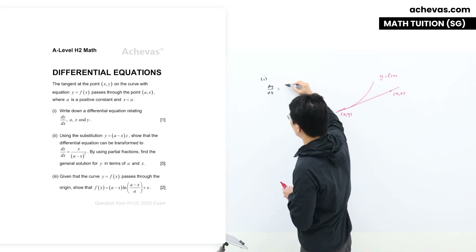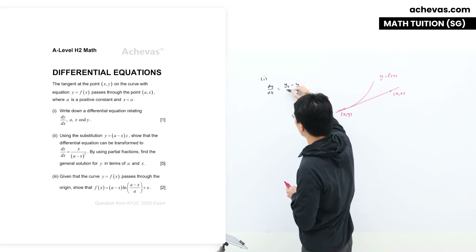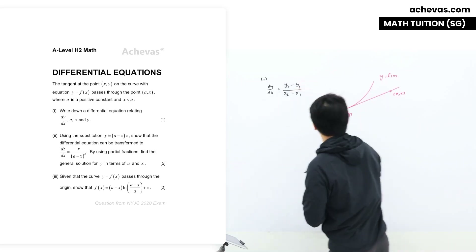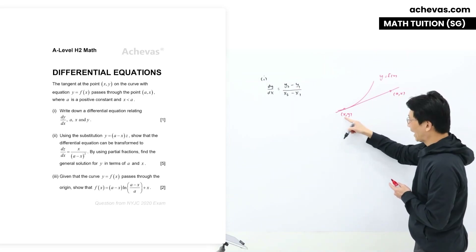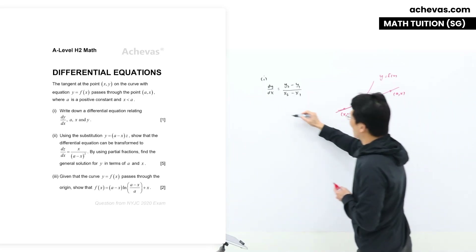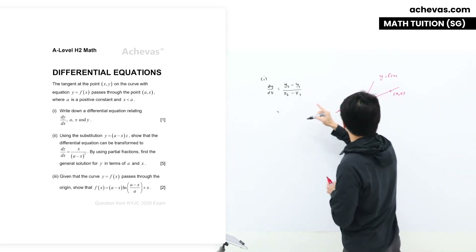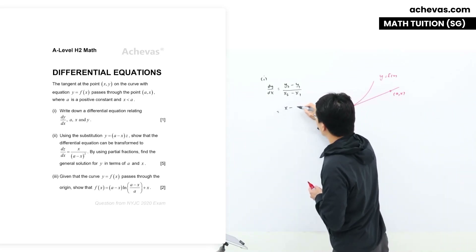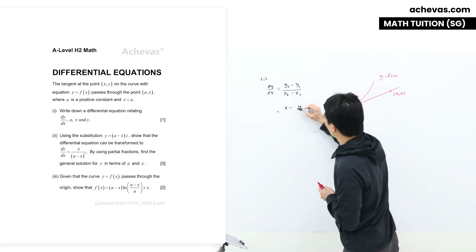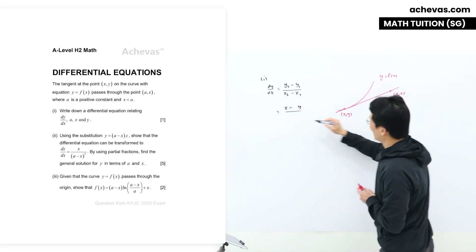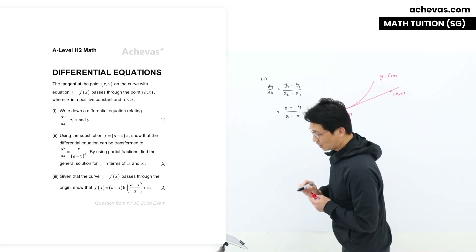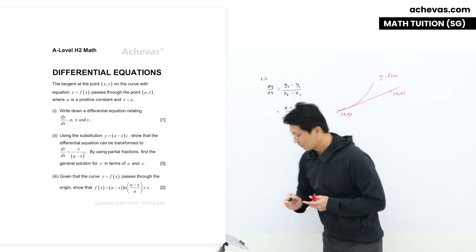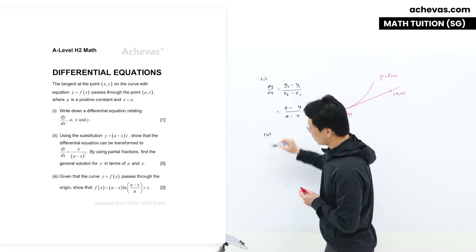We can make use of the general formula for dy/dx, which says it's equal to (y2 - y1) over (x2 - x1). We can imagine that (a, x) is the point (x2, y2), and (x, y) is the point (x1, y1). Putting in the values: x will be my y2, y1 will be my y, x2 will be my a, and x1 will just be my x. This will be my answer for Part 1.